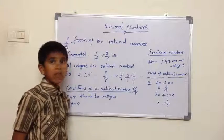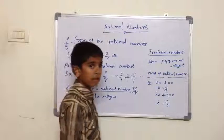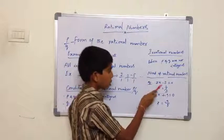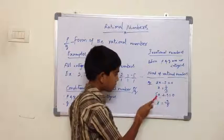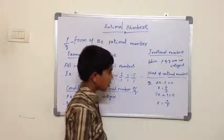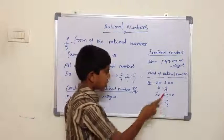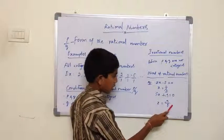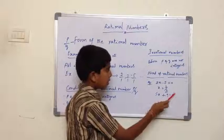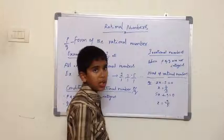Now we will see why we need rational numbers. Here are a couple of equations: 2x minus 3 equals 0, 5x plus 9 equals 0. Now the solutions of these equations are 3 by 2 and minus 9 by 5. Here you can see that the solutions of these equations are in the form of P by Q.